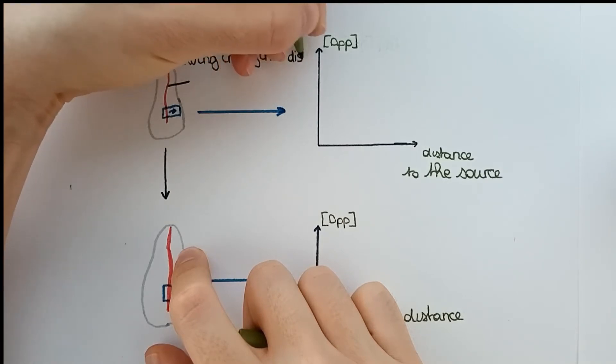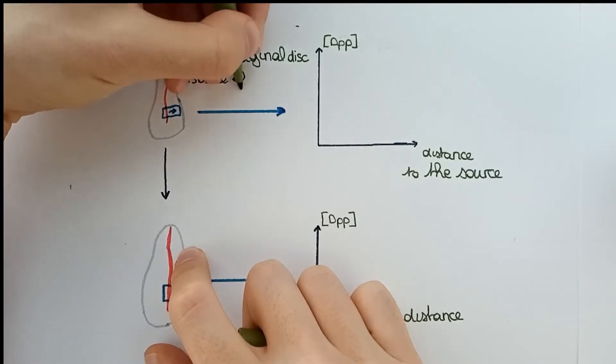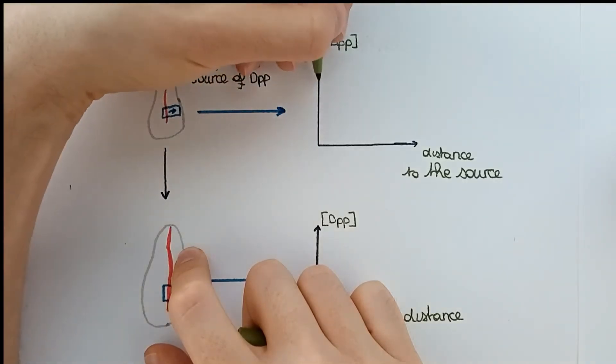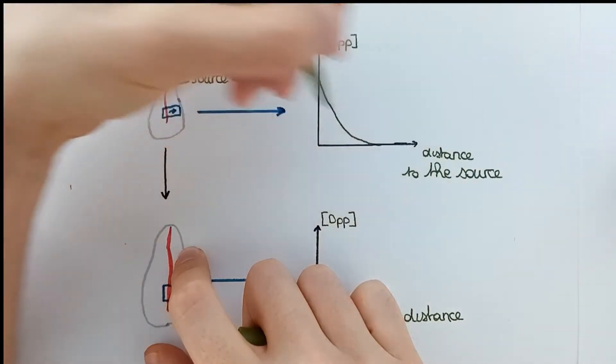Fly wings develop from a structure called the wing imaginal disc, and DPP is produced in a specific area within this disc and spreads in the tissue forming a gradient. Such gradients provide information to cells so that they actually know what their fate should be.